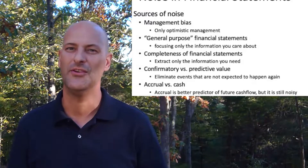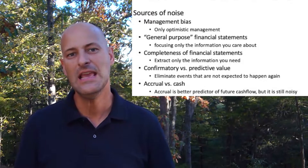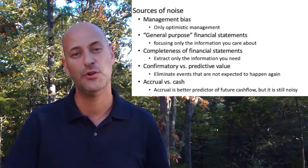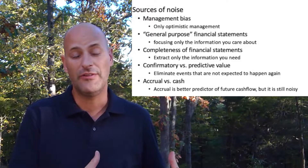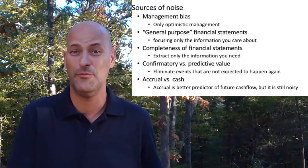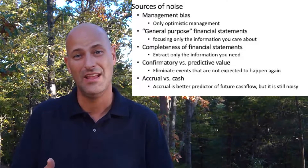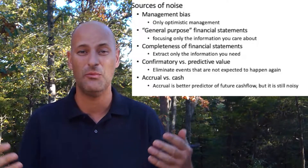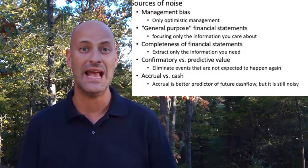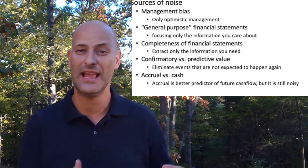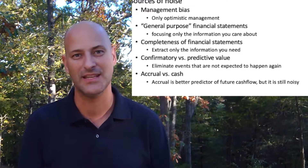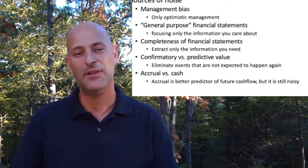Next, we're going to talk about confirmatory versus predictive value. Going back to the conceptual framework of accounting, financial statements are supposed to provide both confirmatory value — telling us what has happened — as well as predictive value — allowing us to predict what will happen in the future. If we're doing financial statement analysis from a valuation standpoint, we're almost only concerned about the future. So confirmatory information about past events, like a company losing a big lawsuit or suffering a natural disaster, becomes noise. I'm extracting that out — I don't want to include a giant loss from a natural disaster unless I expect it to happen every year.